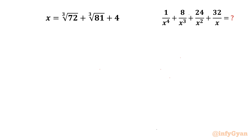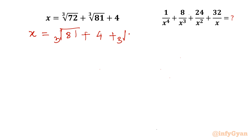Welcome to InfiGyaan, my dear friends. Today in this video we are going to simplify one algebraic expression: 1 over x⁴ plus 8 over x³ plus 24 over x² plus 32 over x, where x is cube root of 72 plus cube root of 81 plus 4. Let us rewrite our expression: cube root of 81 plus 4 plus cube root of 72.